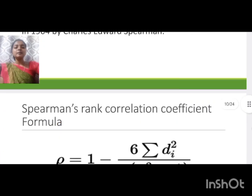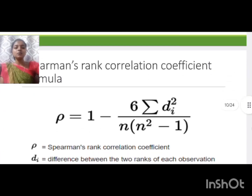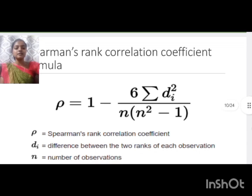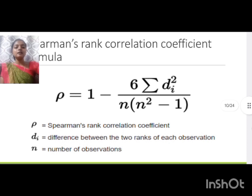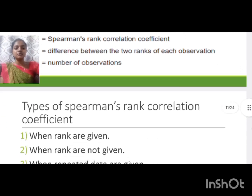The Spearman rank correlation coefficient formula is: ρ = 1 − (6 × Σd²) / (n(n² − 1)), where ρ is the Spearman rank correlation coefficient, d is the difference between the ranks of each observation, and n is the number of observations.